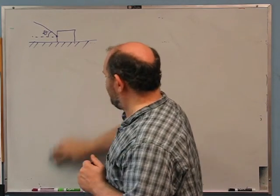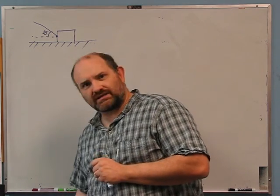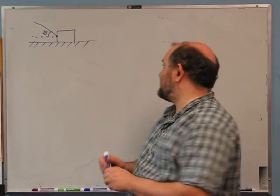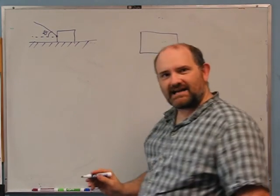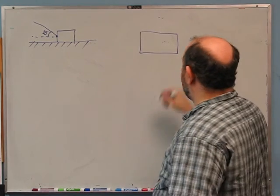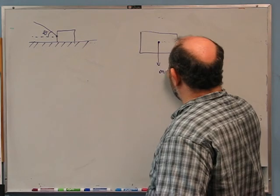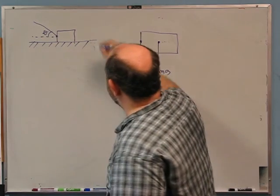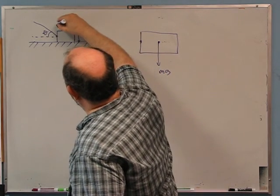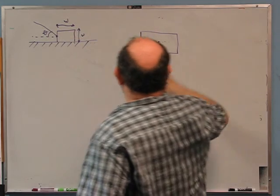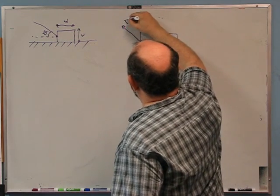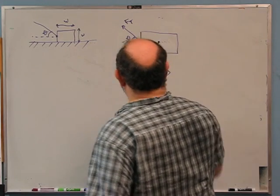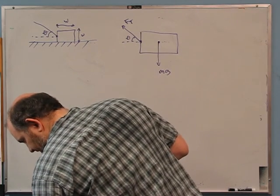Consider the most extreme case where you're pulling hard enough to start lifting the box off. Then all of the normal force is going to be right at the corner. It started in the center and, as you pull harder, it drifts from the center out to the corner depending on how hard you're pulling. So that's why the normal force may not act right at the center. Now we want to figure out where it is acting.